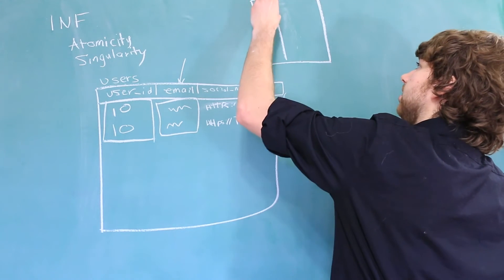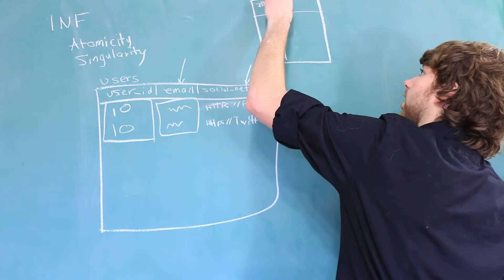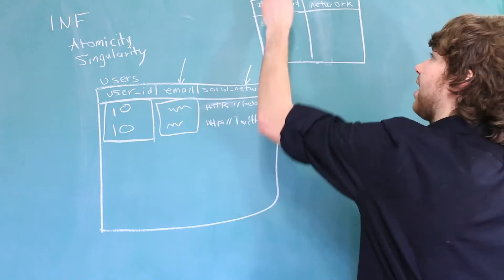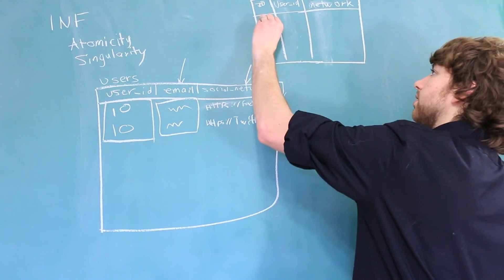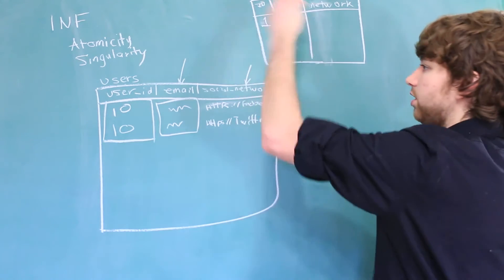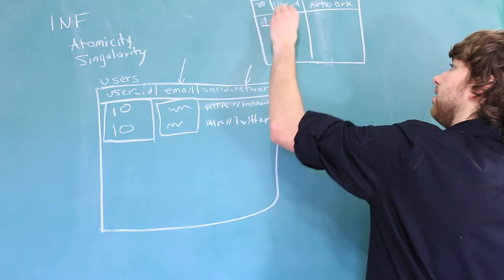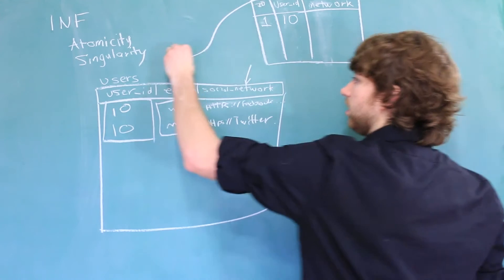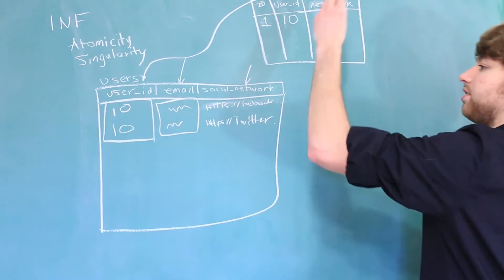So now each network is going to get an ID, so we could say 1, and then we could have the user ID of 10, and this is a reference. So this would be a foreign key to this column right here. And then we'll add the network in there.